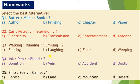Question number five: Ship, Sea, Camel. Ship is seen in the sea. Where is camel seen? Forest, land, mountains, or desert?